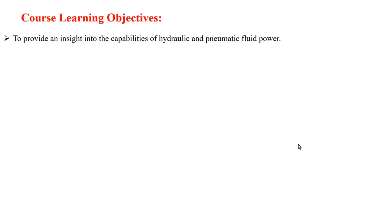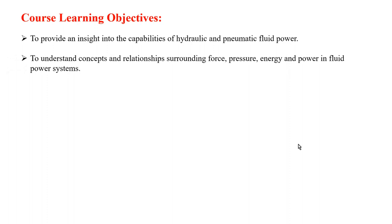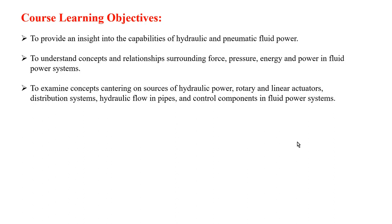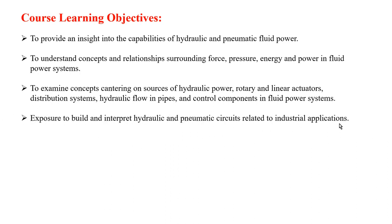The course learning objectives are: first, to provide an insight into the capabilities of both hydraulic and pneumatic fluid power — hydraulic includes different types of liquids, pneumatic includes gases mainly air. Next, to understand the concepts and relations surrounding force, pressure, energy, and power in fluid power systems. Then, to examine concepts pertaining to sources of hydraulic power, rotary and linear actuators, distribution systems, hydraulic flow in pipes, and control systems. Also, to build and interpret hydraulic and pneumatic circuits for industrial applications using simulation software, and to familiarize with logic controls and troubleshooting.